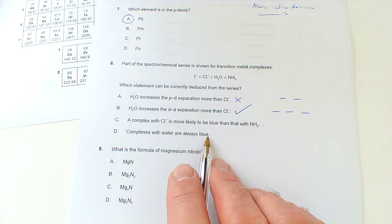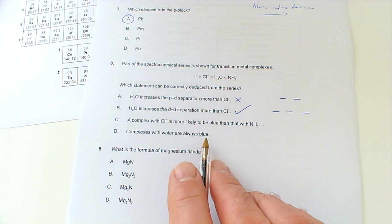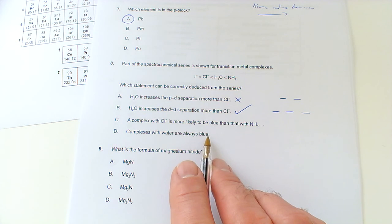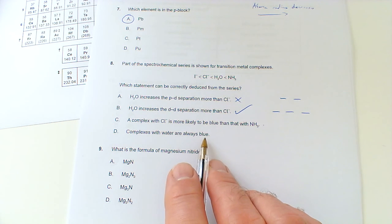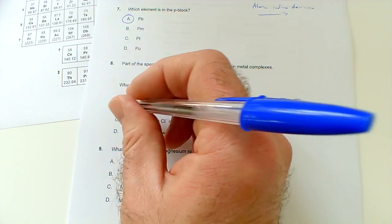So it would have been nicer maybe if they picked a colour where it was actually lower in energy and therefore it would be more obvious that it was wrong. But I'm not going with that one. Complexes with water are always blue? Well not necessarily. Iron 3+ can be yellow, iron 2+ can be a green colour. So just because copper is blue it doesn't mean they're all blue. So not that one. So I'm going to go with B.